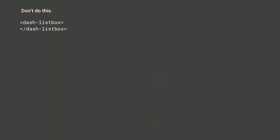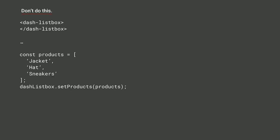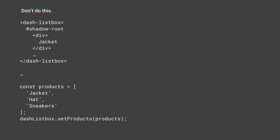Let me show what I would recommend not doing, and then what I prefer. Let's say I'm building a list box. A naive API might have you select the element in JavaScript, pass an array to a method, and have it render everything in the shadow DOM. There are downsides: we need imperative JavaScript setup code, we've got to query the element and call a method to pass data, and we're hiding all our content in the shadow DOM unnecessarily.